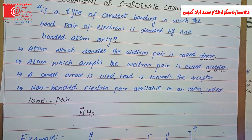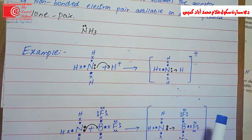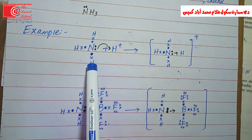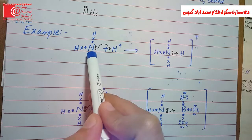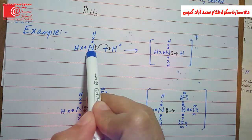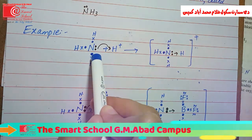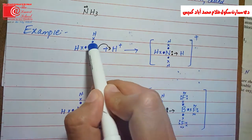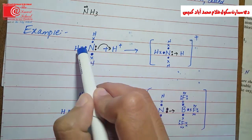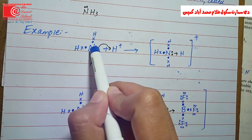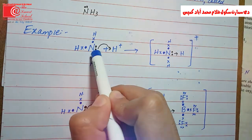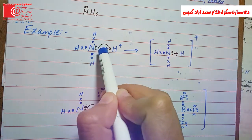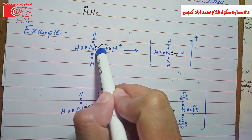Now let's look at the coordinate covalent bond using the example of ammonia. In ammonia, nitrogen has 5 electrons in its valence shell. Nitrogen uses 3 of these electrons to form covalent bonds with 3 hydrogen atoms. The remaining 2 electrons in nitrogen are non-bonding electrons, also called a lone pair.